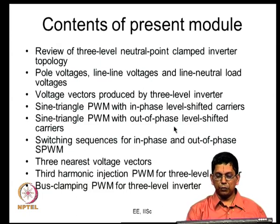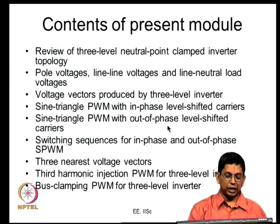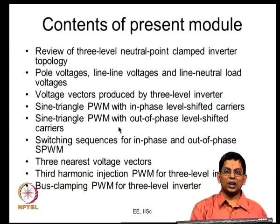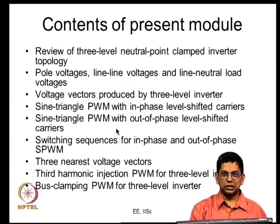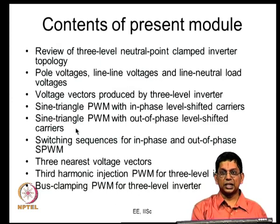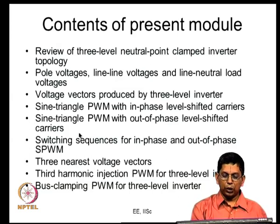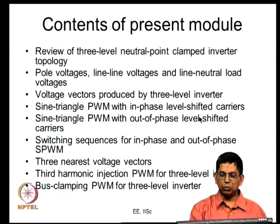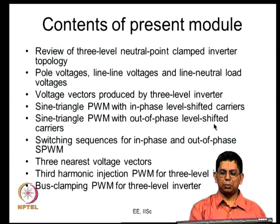The idea of carrier interleaving has been used extensively in parallel converters, where two inverters connected in parallel to the grid compare their modulating signals with carriers at the same frequency but with a small phase shift like 90 or 180 degrees. In the three-level case, using the same leg with level-shifted carriers — there is no real advantage in many cases by using out-of-phase carriers. As discussed in the last lecture, in-phase level-shifted carriers are better than many other possibilities and give lower harmonic distortion.